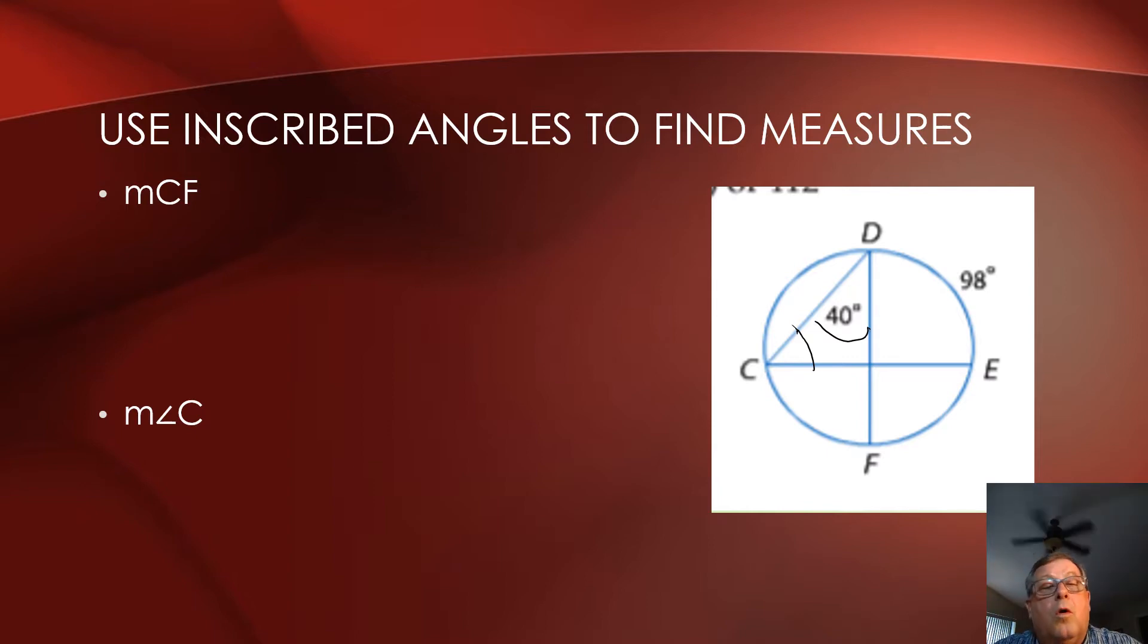We're asked to find the measure of cord CF. Well, let's see. CF. And that cord then is right here. All right. And that means our inscribed angle is CDF, which is right here. And that cord is twice the measure of the inscribed angle. So if the inscribed angle is 40, the measure of that cord then would be 80.